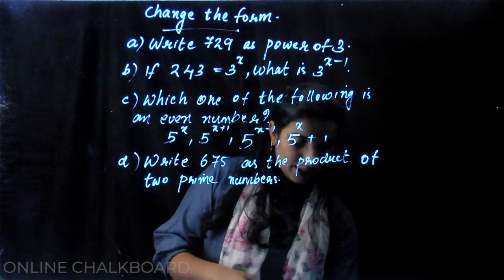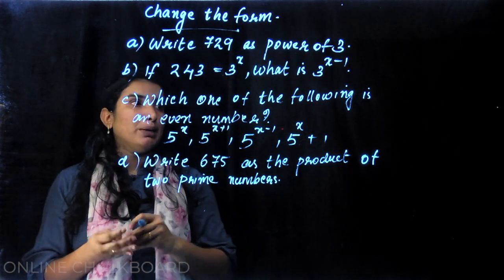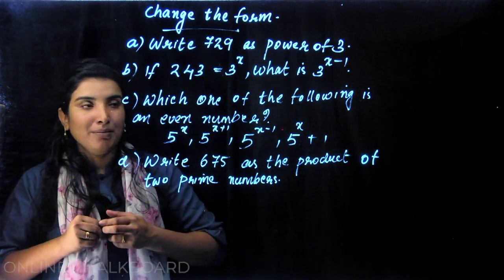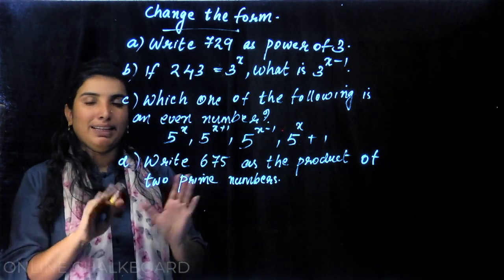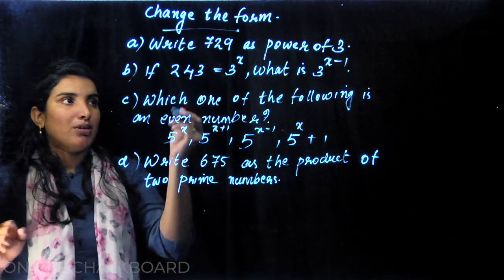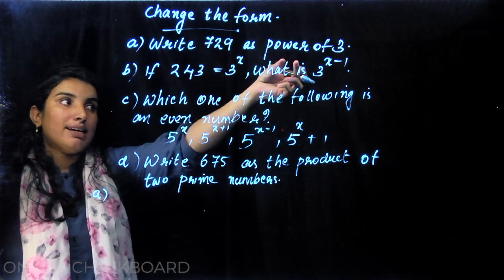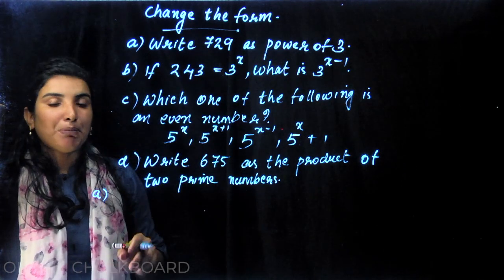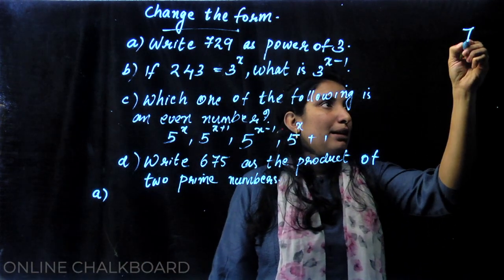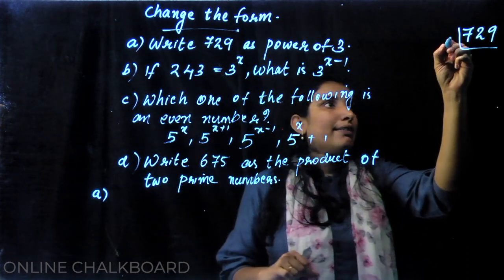This is the Activity, parts A, B, C, D. This is the model of your question paper. The first question to be asked is Question A: write 729 as a power of 3. Three powers are given to 729. What is the method? Factorization.